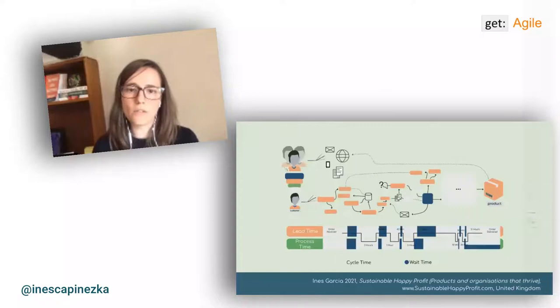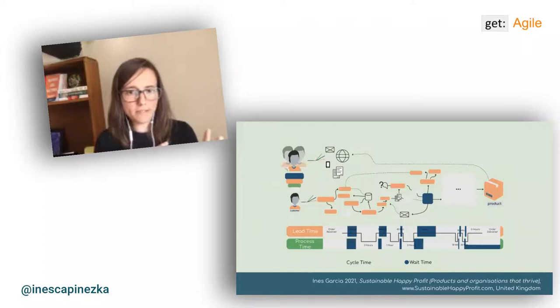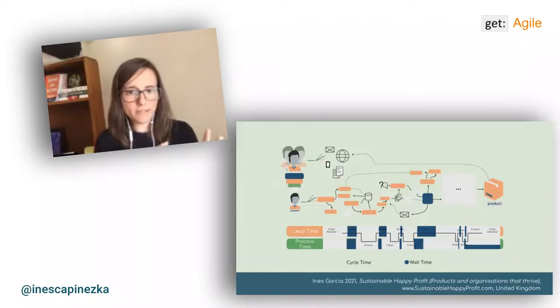Here is another tool we can use. What if, when we work through value stream mapping — where we always look at it to reduce time — we also look at other variables? Like how can we reduce other ways? Things like variables of materiality, the materials that we use, the energy, the sources that we use. How would that look?